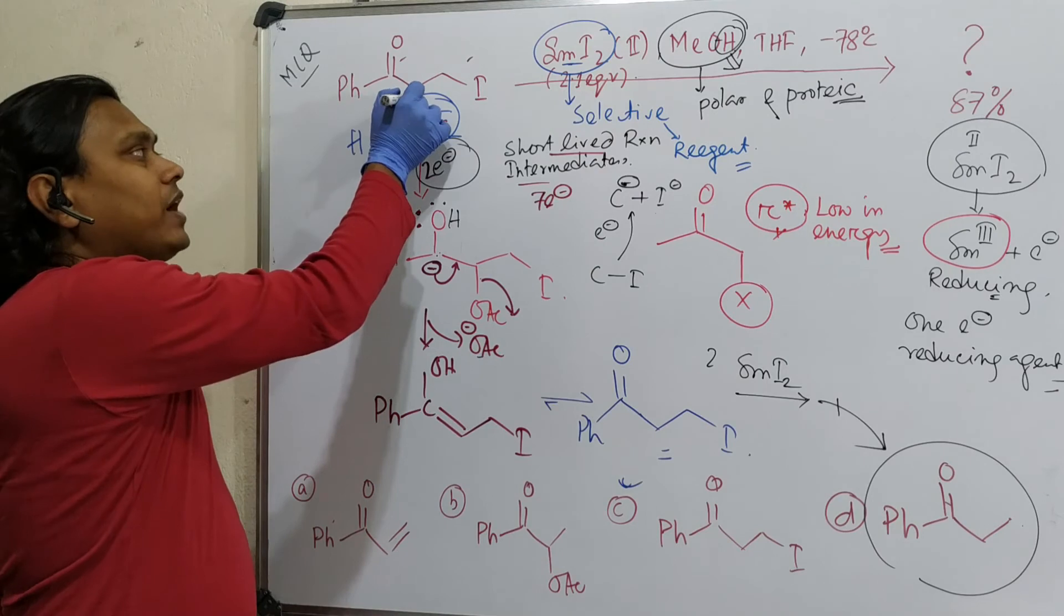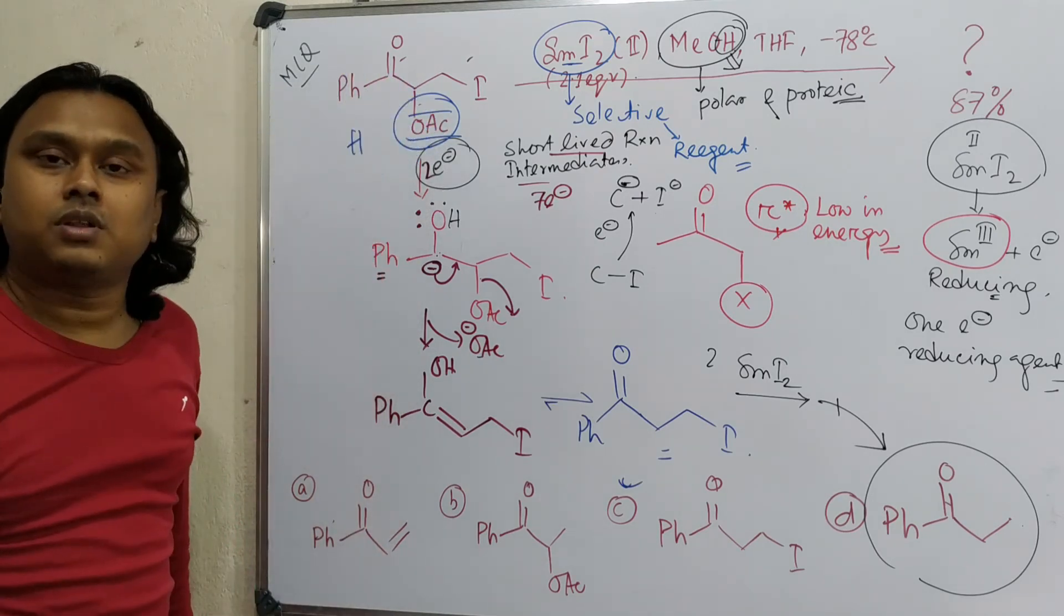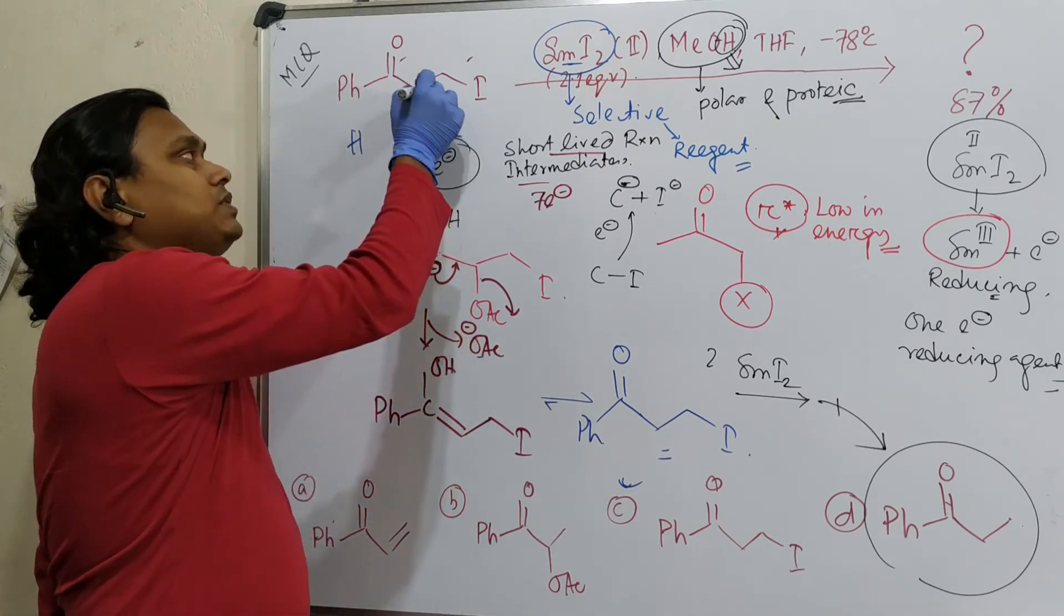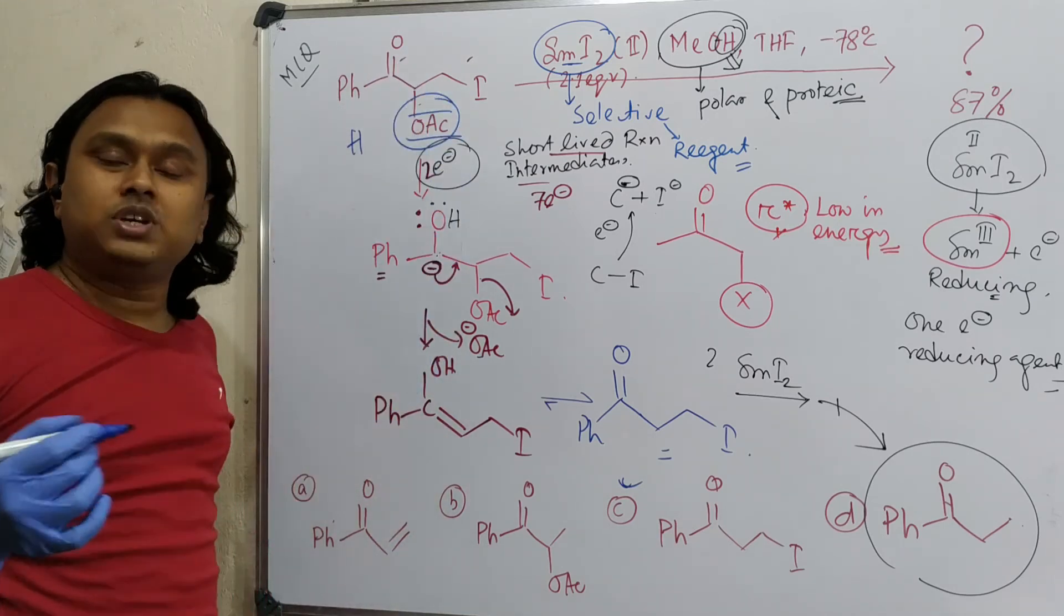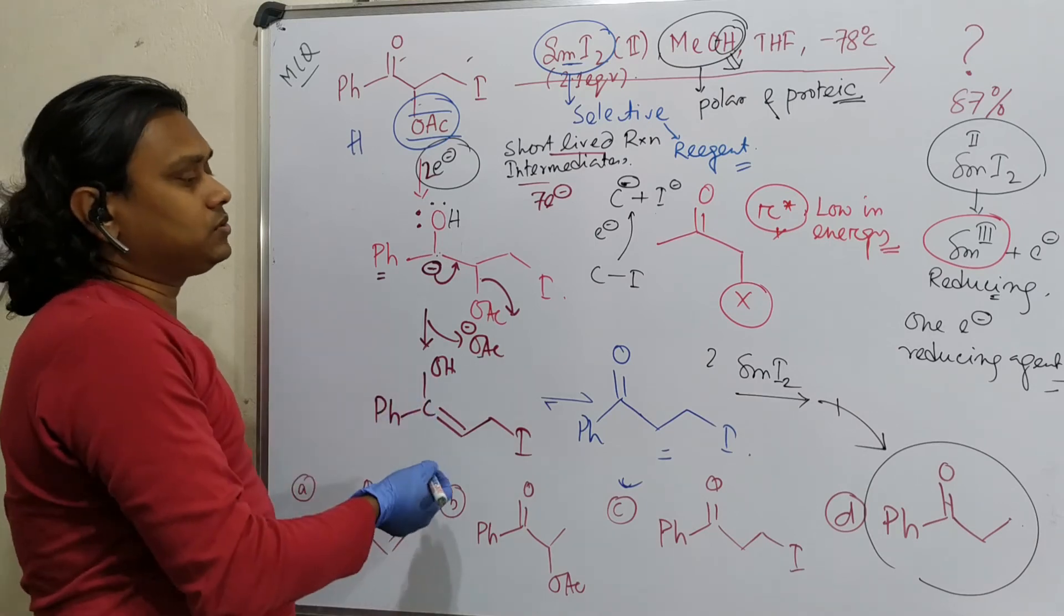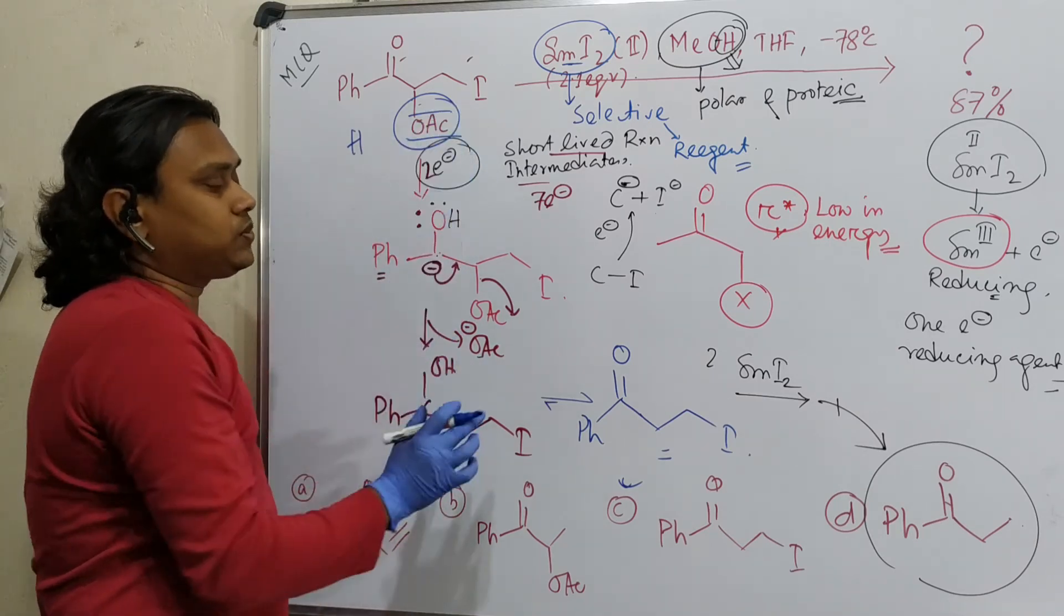So in this way, alpha will reduce selectively. Alpha leaving group means alpha halide derivative. So through enolate, through enol, it will, this will be produced. So in this way, ultimately, what is this?